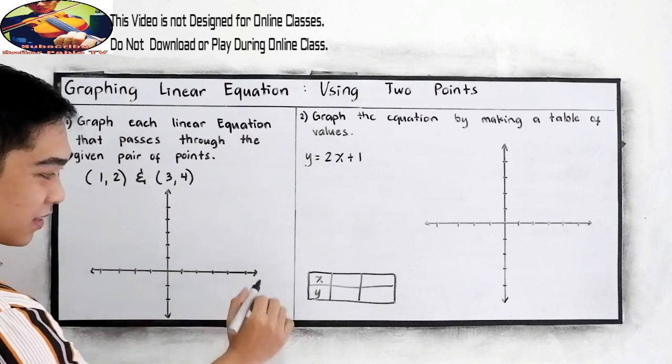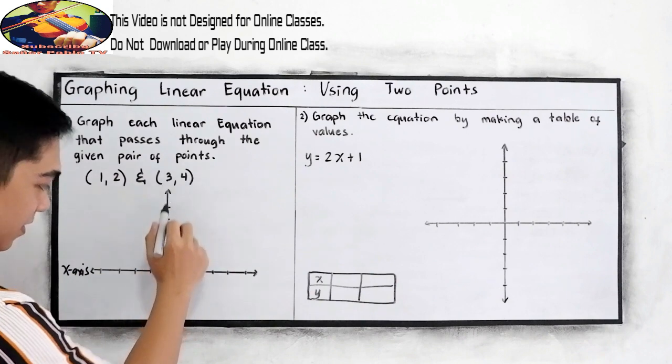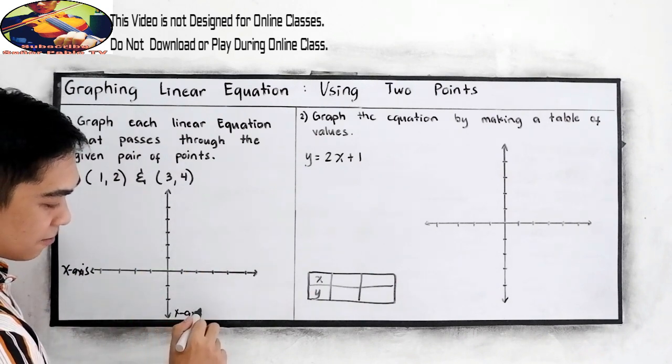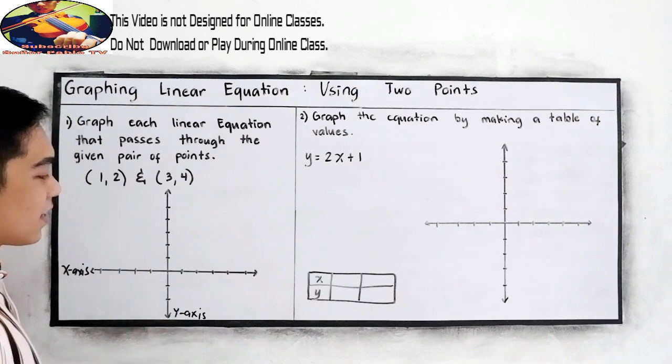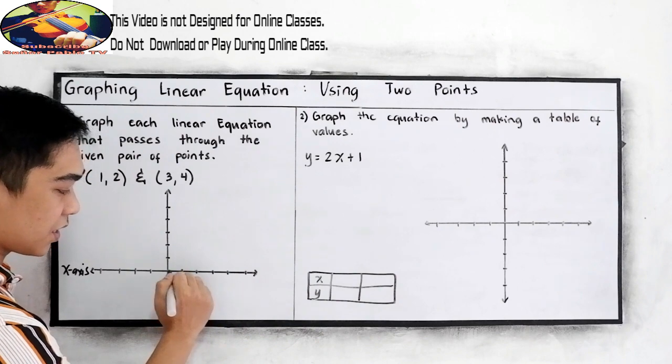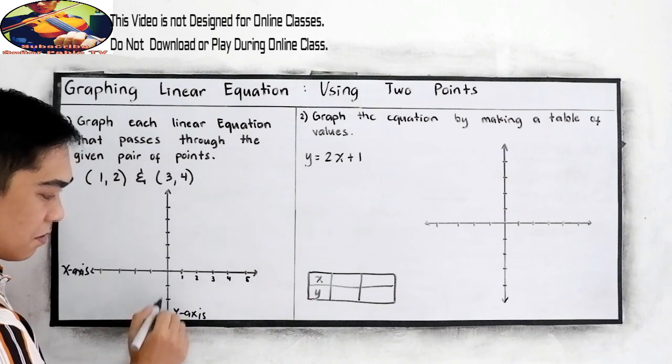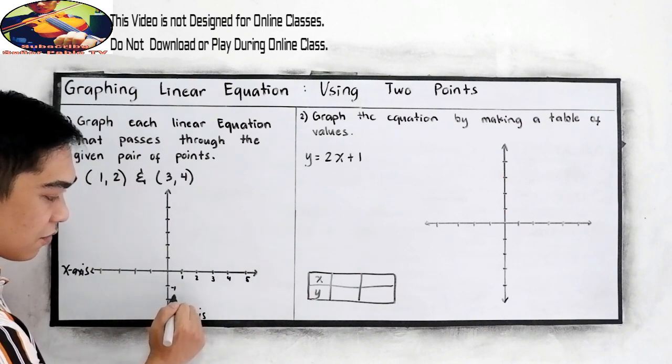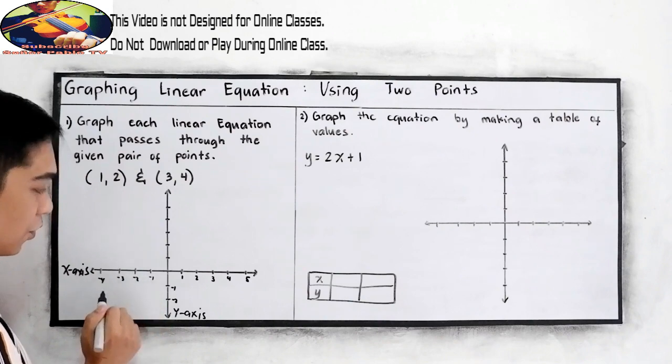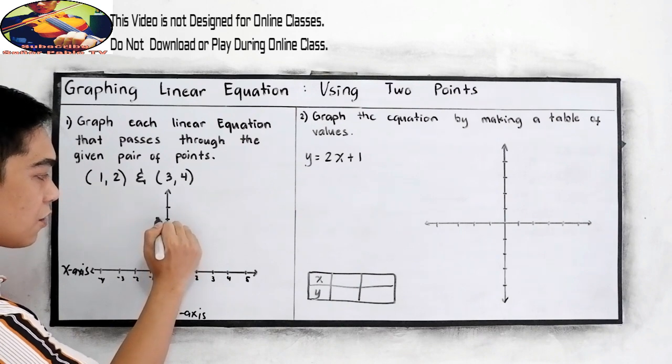In our Cartesian plane, this is our x-axis. And the vertical line is the y-axis. And of course, the positive numbers. Our origin, 0. So 1, 2, 3, 4, 5. Below our origin is negative 1, negative 2, negative 3, negative 4. And upward is 1, 2, 3, 4, 5.